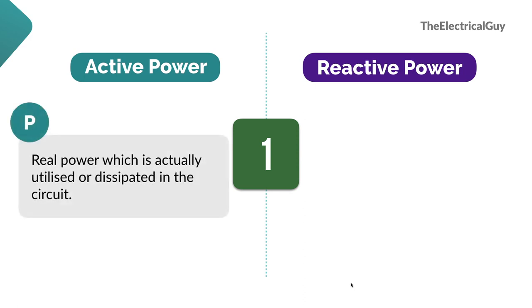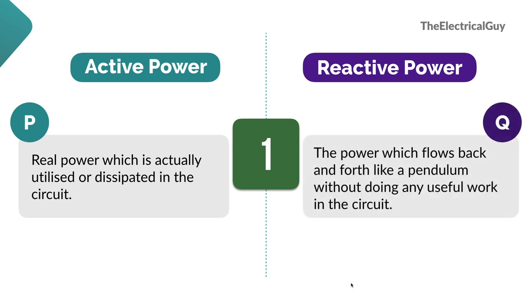Active power is the real power which is actually utilized or dissipated in the circuit, whereas reactive power is the power which flows back and forth like a pendulum without doing any useful work in the circuit.